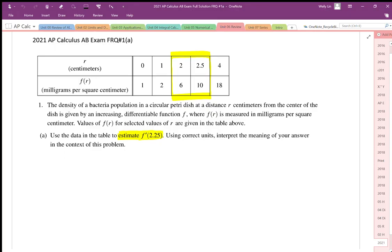The first question is given as a tabular problem where the table gives us the density of bacteria in milligrams per square centimeter as a function of radius.